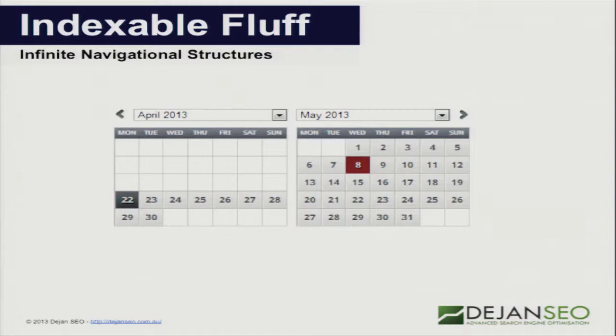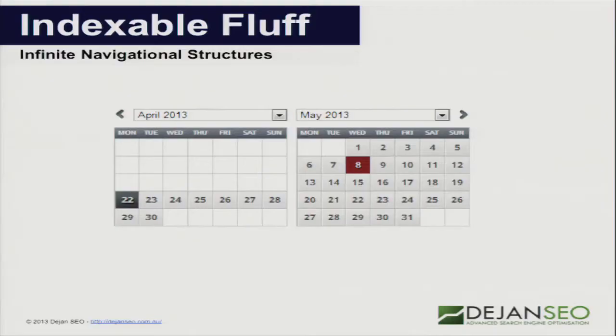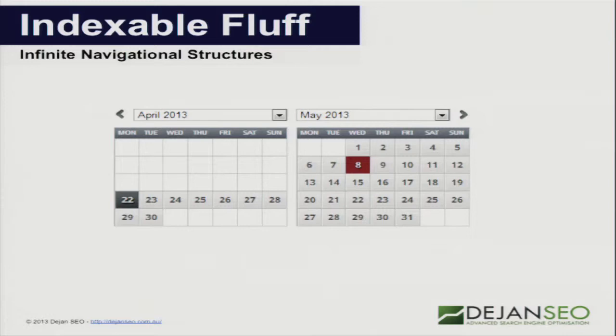Infinite navigational structures — this is a classic example of how things can go wrong. This screenshot is taken from the Virgin website. If you allow search engines to click into a day, then month, you can understand how this could go into an infinite scenario. They can crawl your calendar and go through every day and month and year, going all the way to 2113 still creating fluff. You want to prevent indexation of these pages by disallowing robots to crawl them or by implementing no-index.